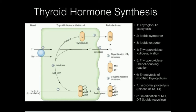Initially there should be a lot of MITs and DITs. However, in step five, thyroperoxidase has another activity: it couples two tyrosine residues, combining MITs and DITs. If it couples an MIT and a DIT, you get T3 because there are three iodines. If you couple two DITs, you get T4 because there's a total of four iodines.